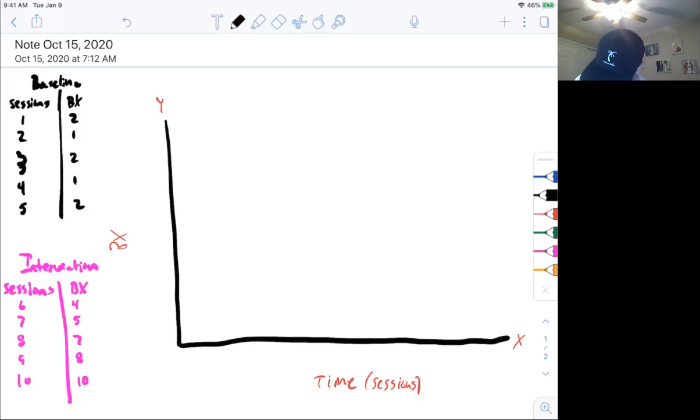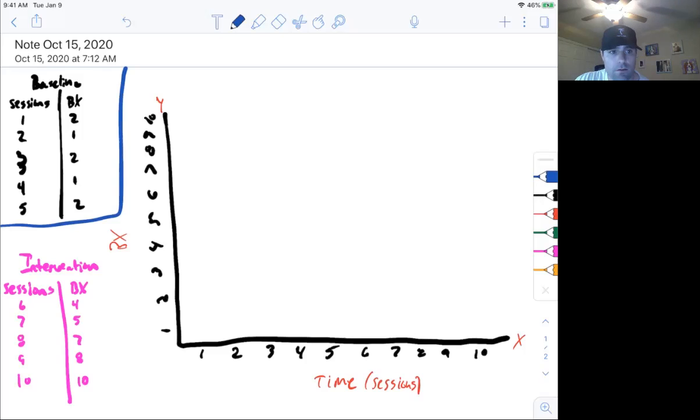So what do we have? We have one, two, three, four, five, six, seven, eight, nine, ten sessions. Five baseline, five intervention. Let's graph our baseline first, right here. So we need our behavior points. We'll go up to 10. And then we'll graph. So let's look at our baseline. Session one was two. Session two was one. Session three was two. Session four was one. Session five was two.